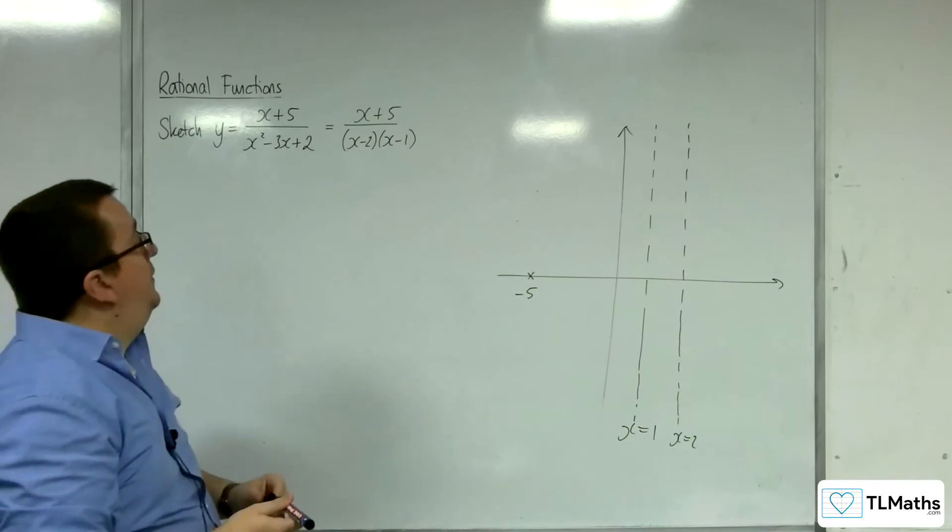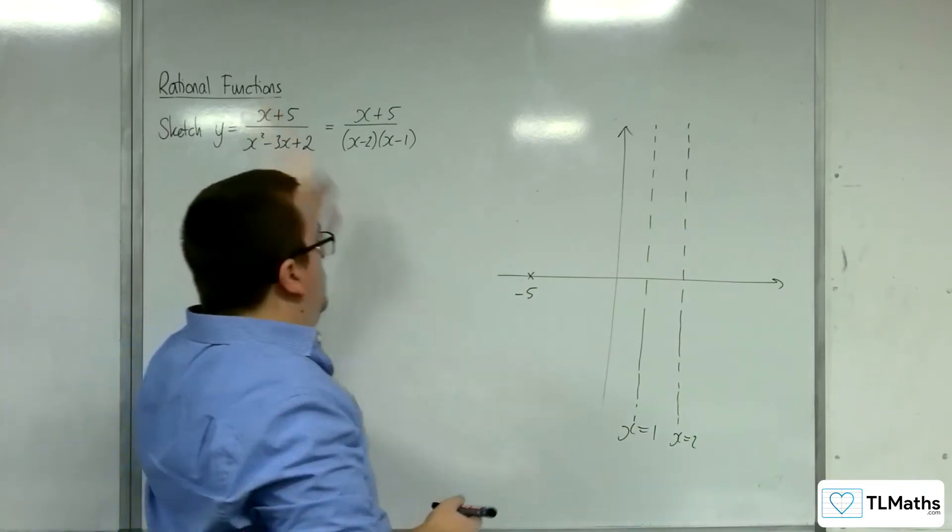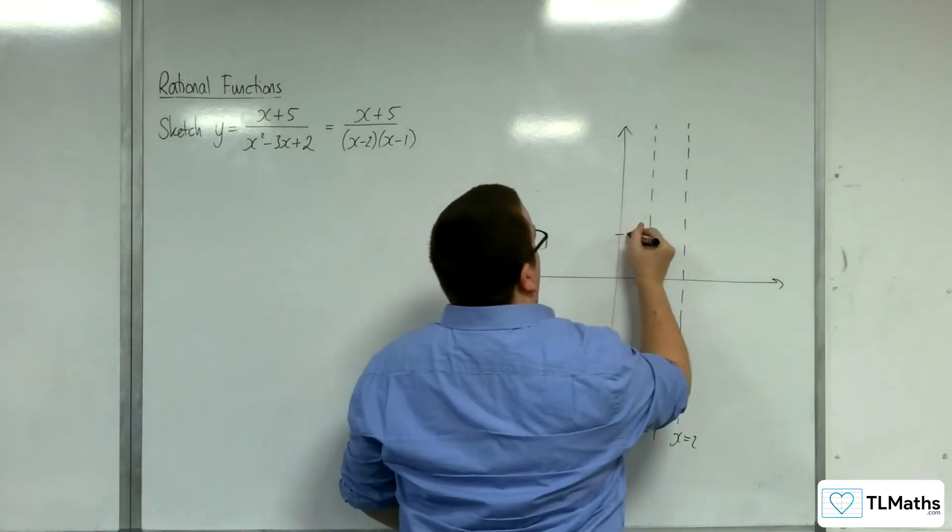And where is it crossing the y-axis? Well, that's when x is 0, and so that would be 5 over 2. So 5 halves, somewhere there.